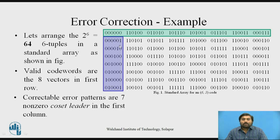There are 7 non-zero coset leaders. The all-zero vector also serves as a coset leader and a codeword, having a dual role as studied in the previous session. Apart from that dual-role element, there are 7 non-zero coset leaders.